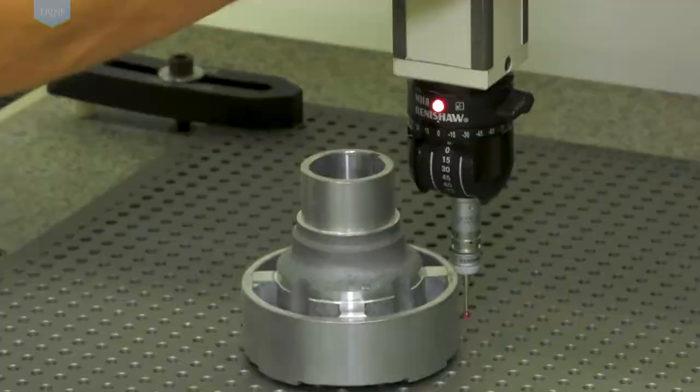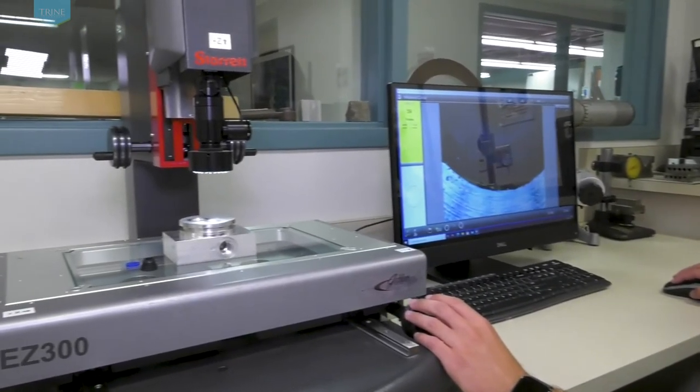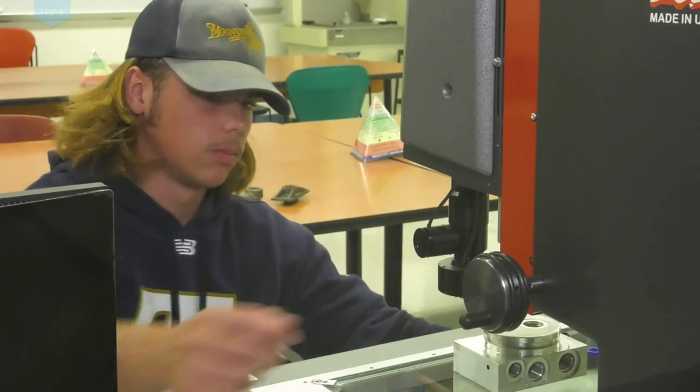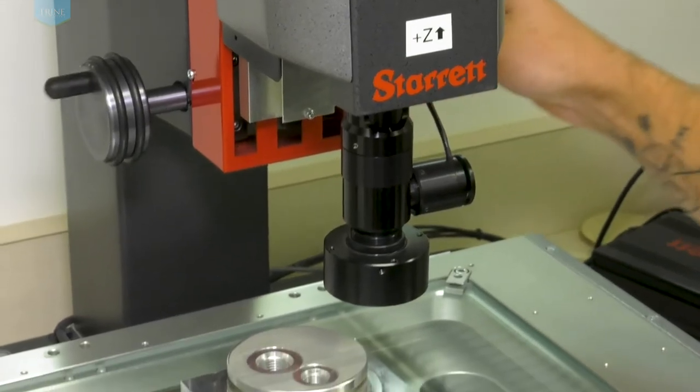A state-of-the-art vision system with 12x zoom and touch screen operation allows students to measure with state-of-the-art measurement equipment. This machine can measure to an accuracy of 2 microns or less.